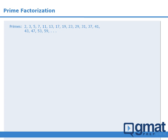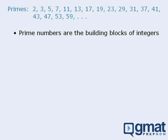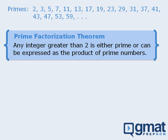In the last lesson, we examined prime numbers. During that lesson, I suggested that prime numbers are the building blocks of all integers. The meaning of that statement is best illustrated by the following theorem: any integer greater than 2 is either prime or can be expressed as the product of prime numbers.